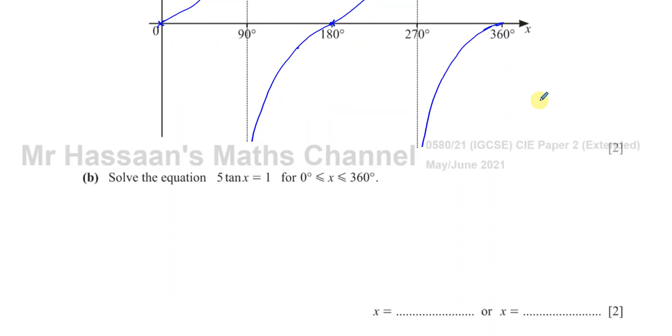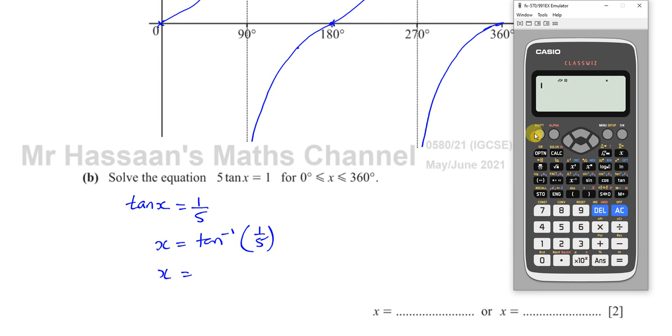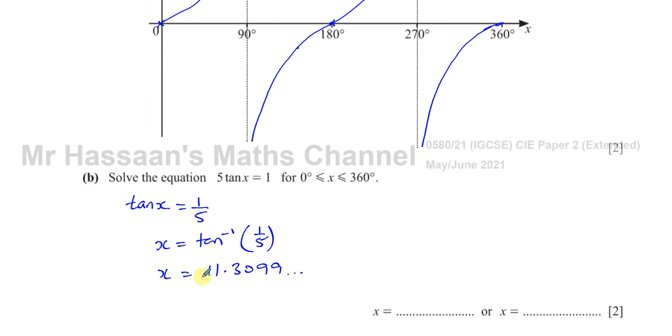And then part B says, solve the equation 5 tan X equals 1 for values of X between 0 and 360. Again, this is something which is more focused, solving trig equations. The first thing you've got to do is make tan X the subject. So we divide both sides by 5. And then we want to find the angles for which the tan ratio is 1 fifth. So what we're going to do is we're going to find inverse tan of 1 fifth. We use the inverse tan button in our calculator when we know the ratio and want to find the angle that has that ratio. So we go to our calculator and we put inverse tan. So we press shift tan and we're going to have 1 over 5. And that will give us the main angle that has that ratio, which is 11.3099. I'll write it like that for now. So that's the main angle.